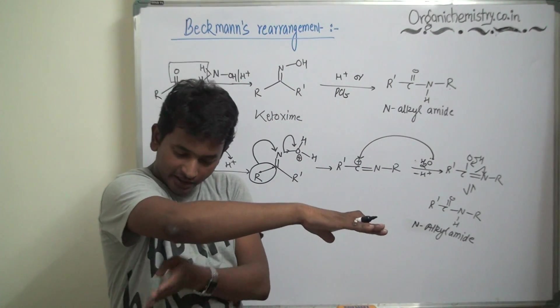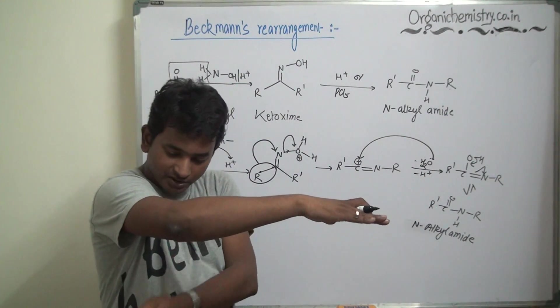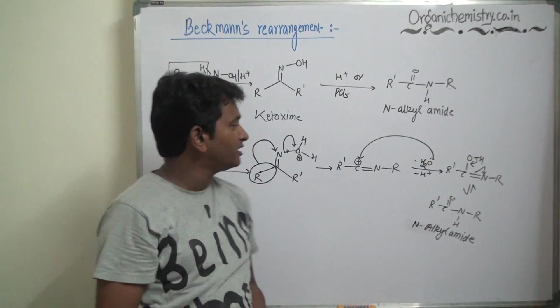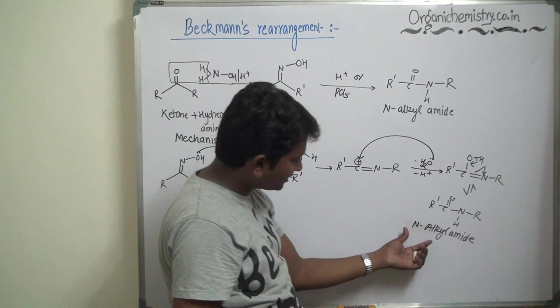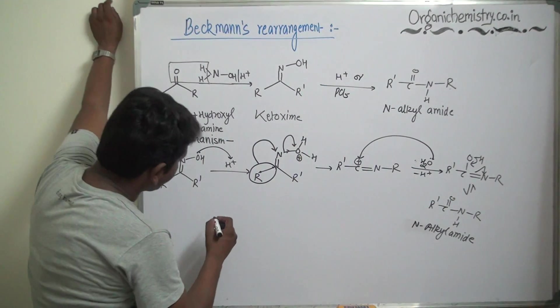Then this R migrates from this carbon to this nitrogen. Migration of this R from this position to this position occurs and loss of water will take place. Finally this compound is formed on which water attacks to finally give N-alkyl amide. So capsule of this Beckmann's rearrangement is this part.